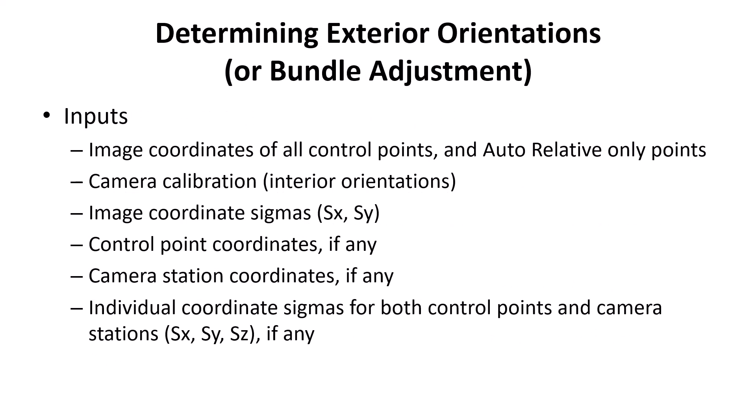As inputs, we need image coordinates of all ground control points, and the software will identify auto-relative-only points — points that are common in multiple images. You want an interior orientation that's already been performed, so you have the camera calibration loaded into the software. The image coordinate sigmas are calculated automatically. The ground control coordinates, if you're using them, need to be input — those could be targets on a rock face, for example. You could also import known camera location coordinates if you have them.